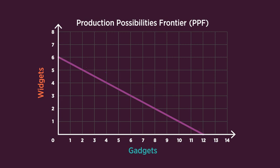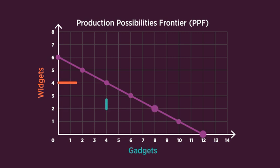Here's the straight frontier line again. It shows that Econ Aisle can produce a maximum of 12 gadgets, or 6 widgets, or any other combination along the line. At this point, Econ Aisle can produce 12 gadgets and 0 widgets. Widget production then increases by 2, then by 2 more, and by 2 more, indicating all widgets and no gadgets. So along the straight line, each time Econ Aisle increases widget production by 2, it loses the opportunity to produce 4 gadgets.